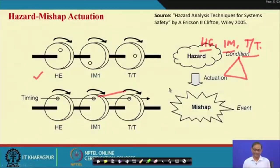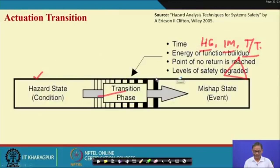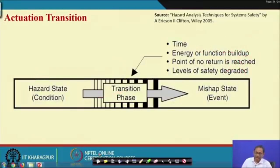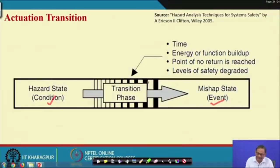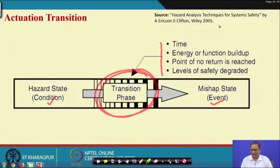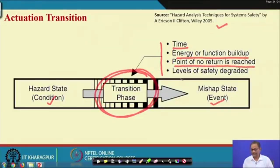This is another way of explaining the hazard mishap actuation. The safety engineer's job — I am repeating this several times — is to prevent the transition from hazardous condition to mishap. That transition from hazardous condition to mishap is the biggest issue. What is written here: the time, energy, or function build-up point of no return is reached, and the level of safety is degraded. These things will happen — then only a hazard will lead to an accident.